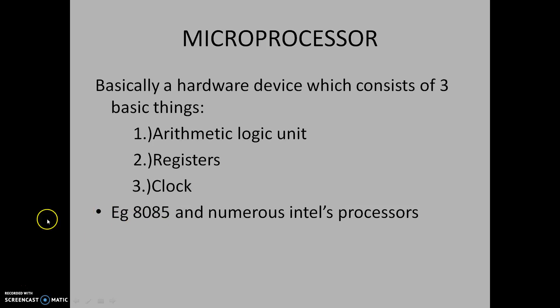Basically, a microprocessor is a hardware device which consists of three basic things. First, the arithmetic logic unit, which does arithmetic and logic operations like addition and multiplication on the digital information. Second, there are registers — registers are components used to store the digital information.